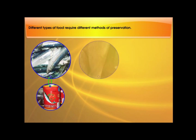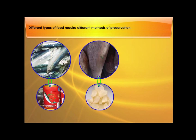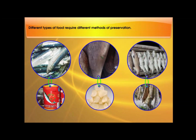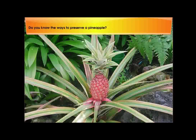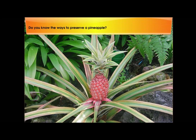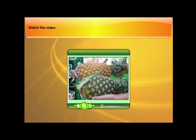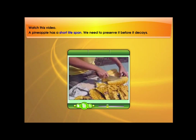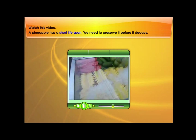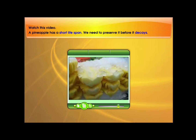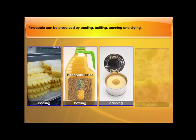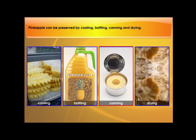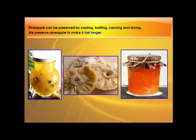Different types of food require different methods of preservation. Let us consider pineapple. Do you know the ways to preserve a pineapple? A pineapple has a short lifespan, so we need to preserve it before it decays. Pineapple can be preserved by cooling, bottling, canning, and drying. We preserve pineapple to make it last longer.